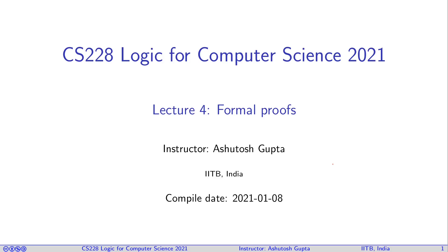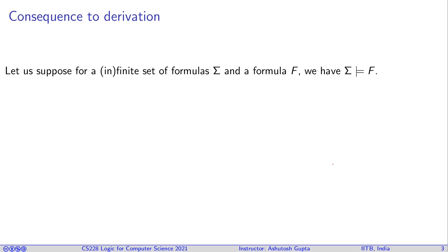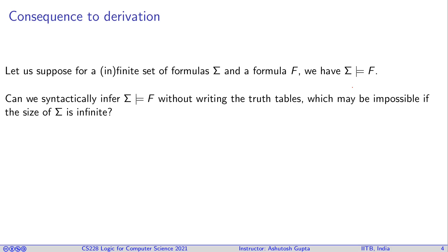We have seen a method of deciding whether a formula is valid or not — simply write down the formula and draw the truth table. However, this is not a very desirable way of solving a validity question. Suppose we have a formula F, possibly over an infinite set, and we want to show that σ implies F. We cannot do that truth-table-wise because the truth table requires finitely many variables, and σ can potentially have infinitely many variables.